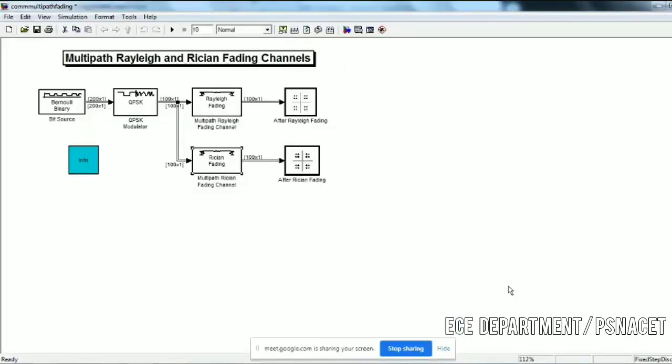This is a Simulink model that has been generated. The bit source we are going to use is Bernoulli binary, plus 1 or minus 1. The bit source is supplying a 200 by 1 matrix given to the QPSK modulator for the baseband modulated signal. Then it is passed through one path.